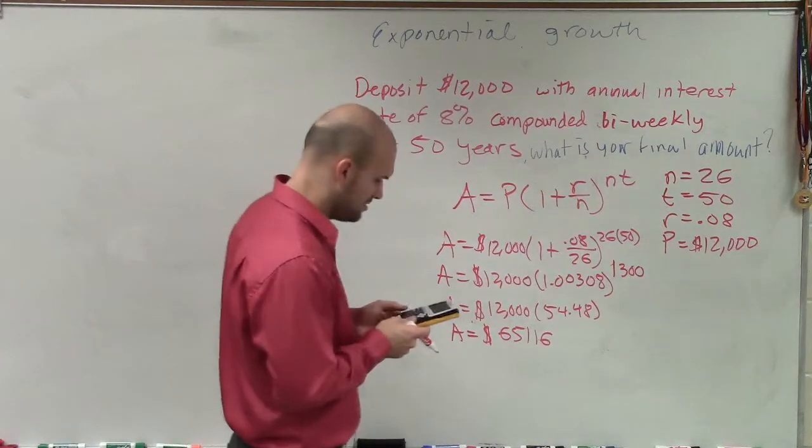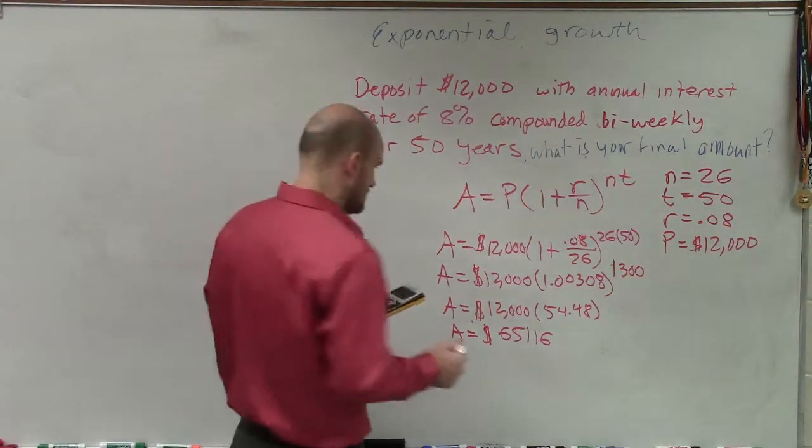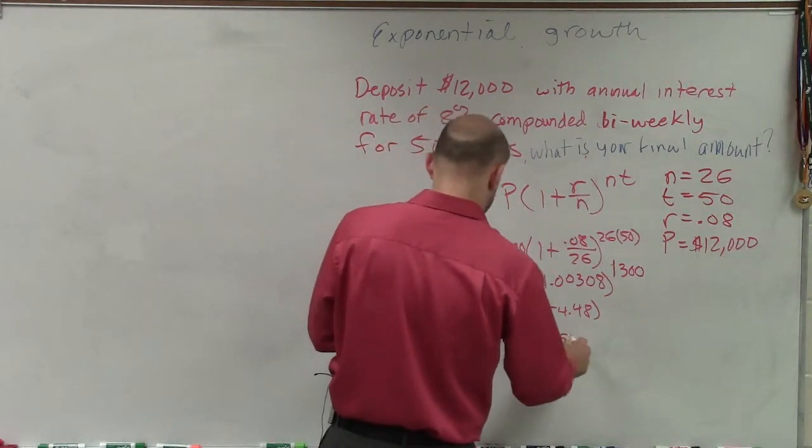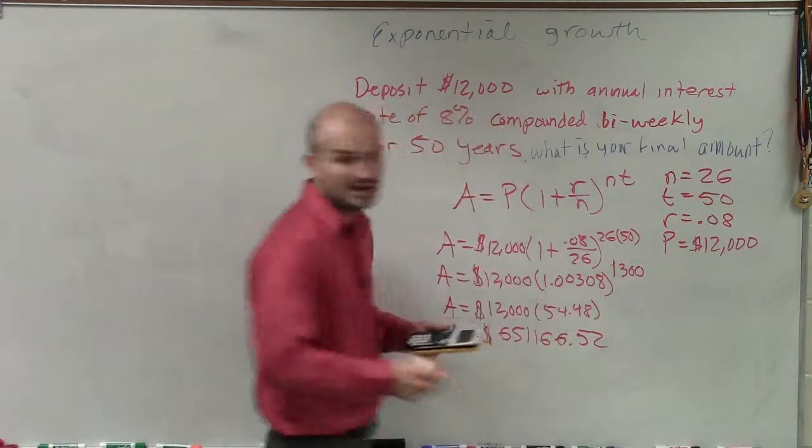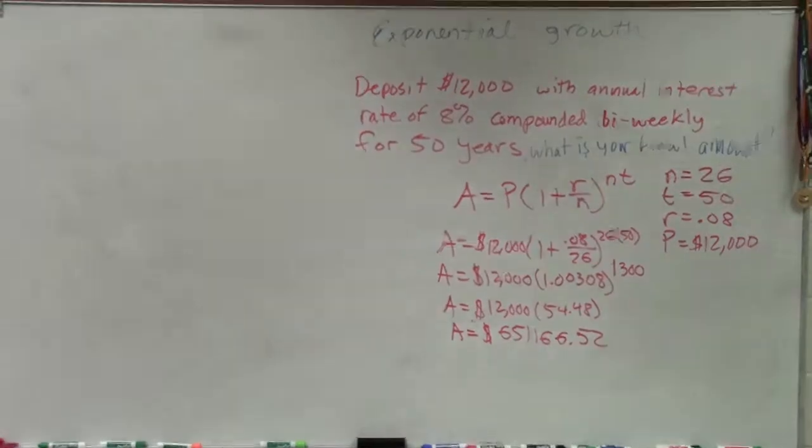Am I missing a decimal point? Oh, I didn't multiply it times. 651,166.52. Correct? Student: Is that what you got? Yeah, that would be your more corrected answer without doing the rounding.